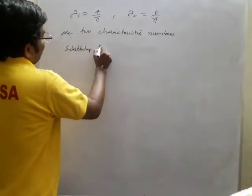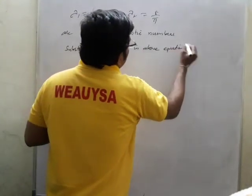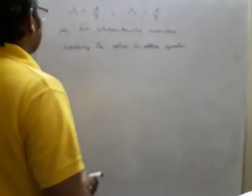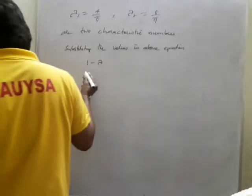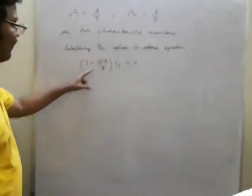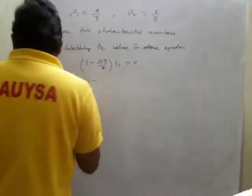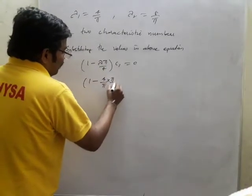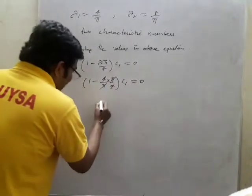Substituting the values in the eigen equations — that is the c1 and c2 equations we got. We will substitute λ₁ in those. From the first equation, 1 - λπ/4 = 0, substituting λ₁ = 4/π: 1 - (4/π)·(π/4) · c1 = 0. The 4 and π cancel, so 1 - 1 = 0, meaning c1 is 0.